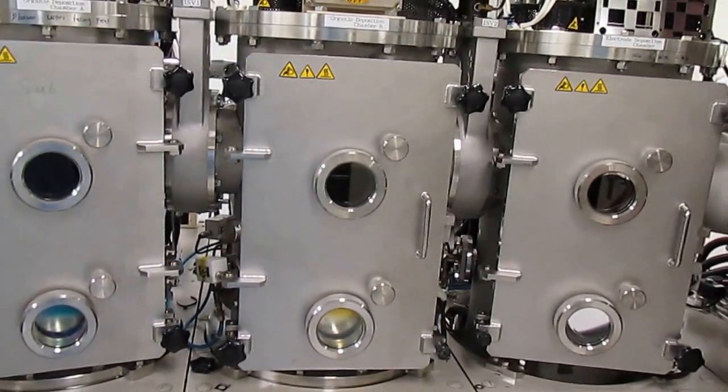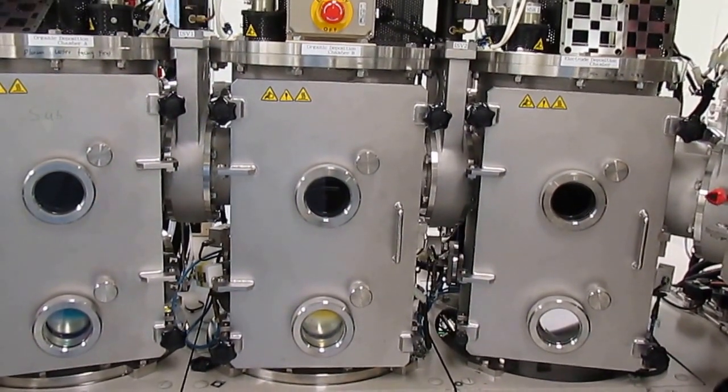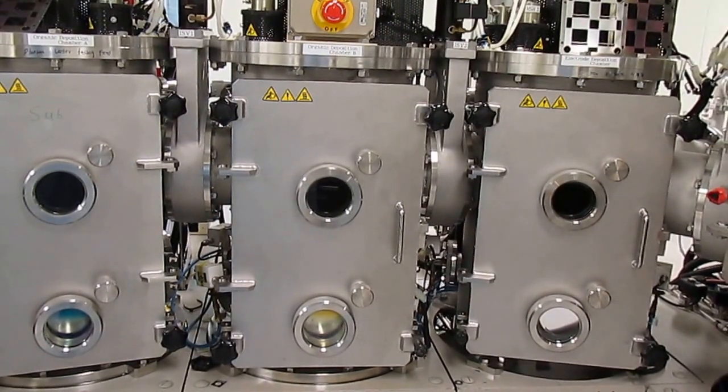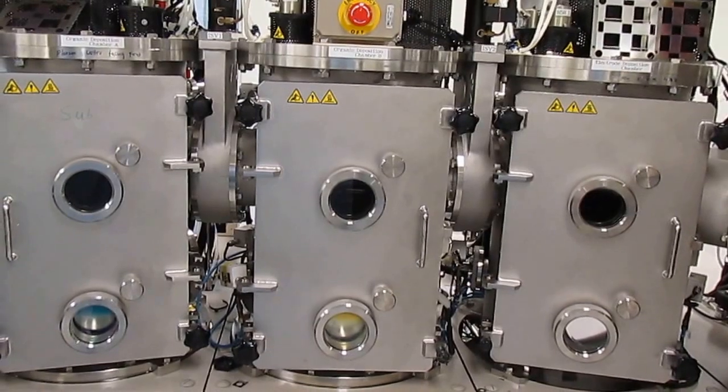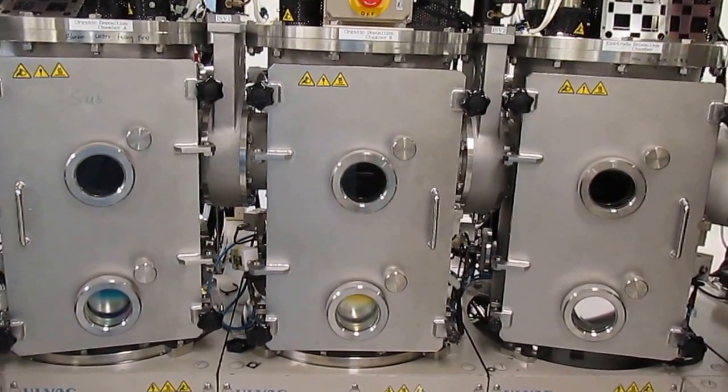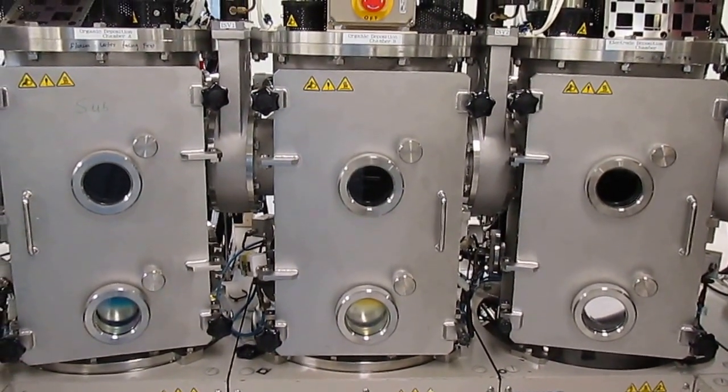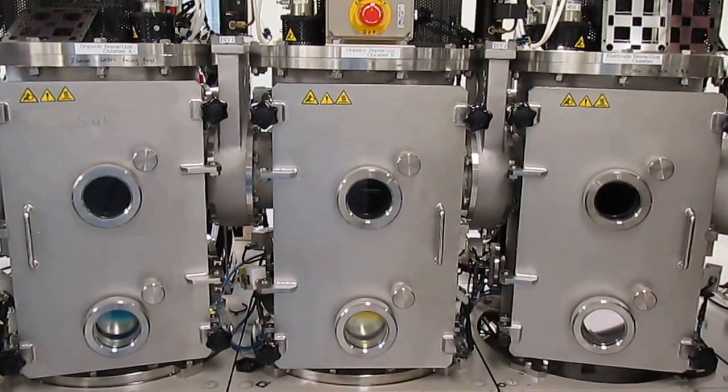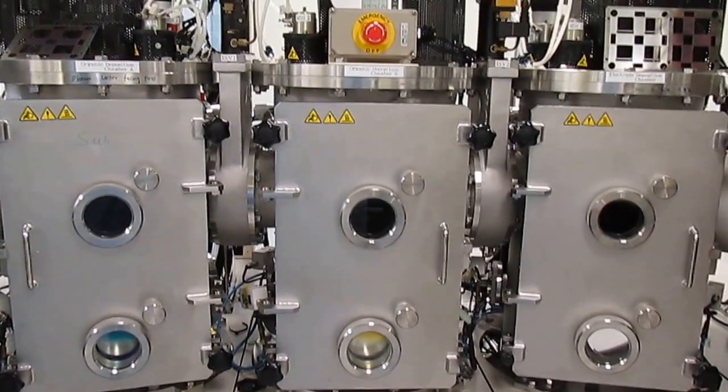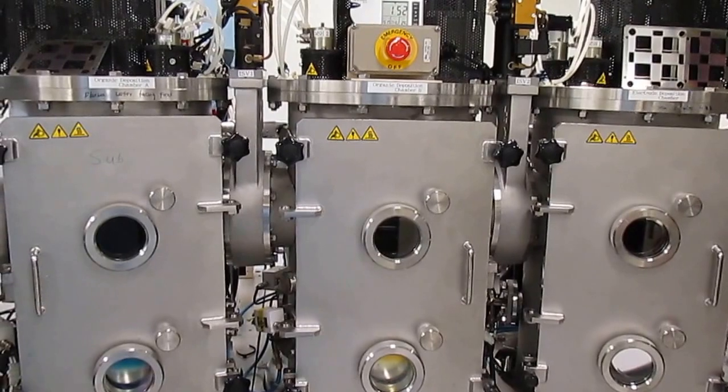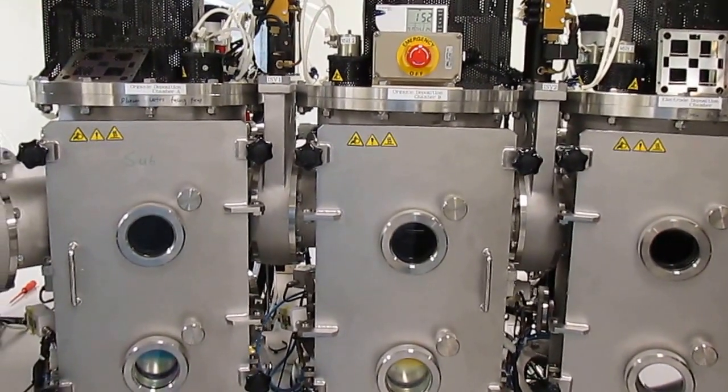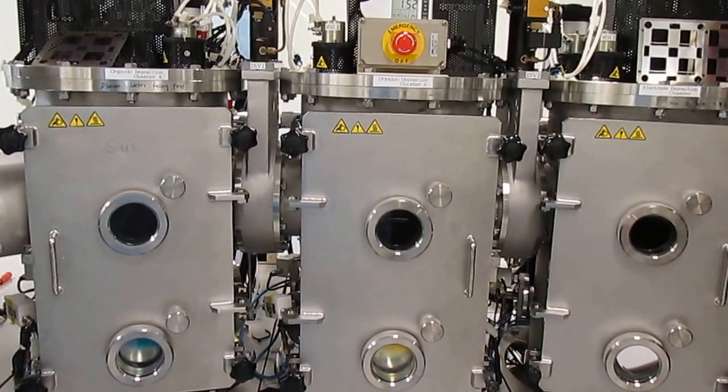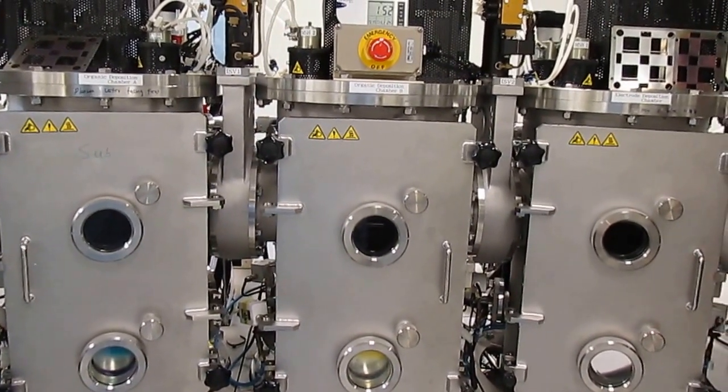The substrate then moves into the second chamber where there are six crucibles. You can evaporate hole transporters, host, dopants (that's emitters), electron transporters, electron injectors, hole blockers, and the like. You can evaporate up to six materials concurrently, or usually a host or two hosts and a dopant.